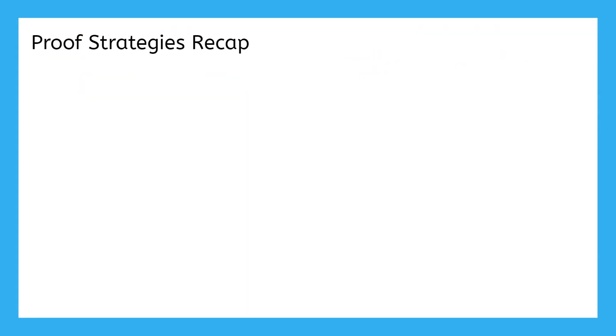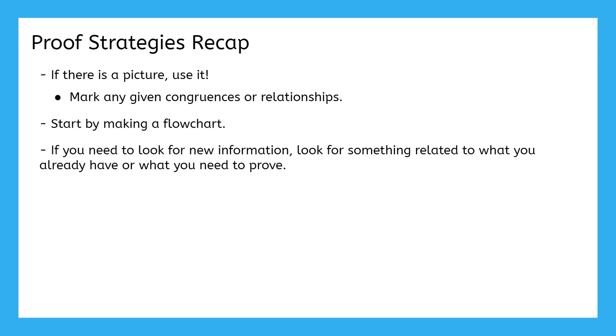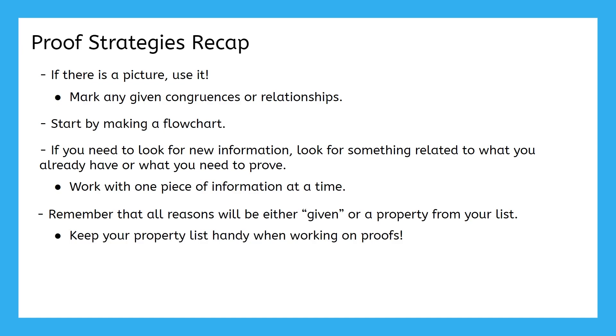No two proofs will ever be the same, so it's important for you to have some general strategies that you can use to help you successfully complete any proof that comes your way. So let's recap some key strategies that we used in this video that can help you in your practice. If there is a picture, use it. Mark congruences or other relationships from the given information first. Eventually you'll want to make a two-column proof for your final answer, but you can start by making a flowchart to help visualize how statements are related to each other. If you need to look for new information, look for something that is related either to what you already have or to what you need to prove. And don't overwhelm yourself, work with only one piece of given information at a time. Lastly, remember that every time you write a reason, it will either be given or it will be a property from your list. That means you'll want to keep your property list handy whenever you're working on proofs.